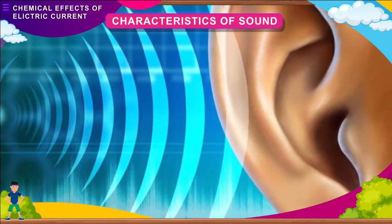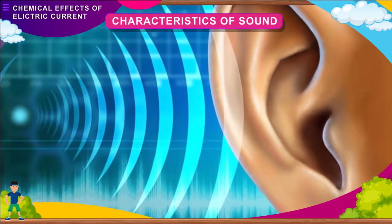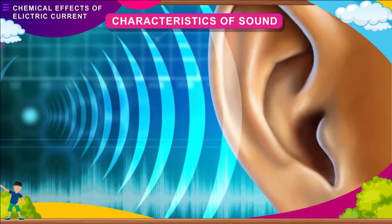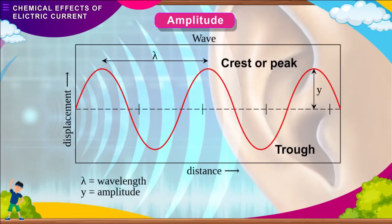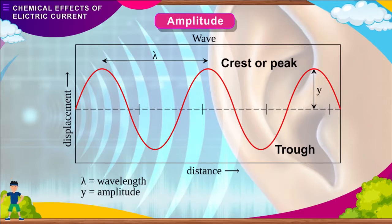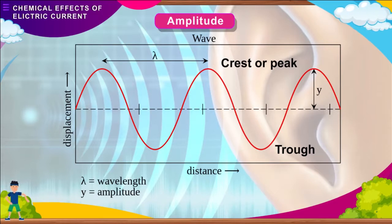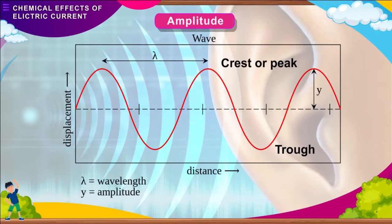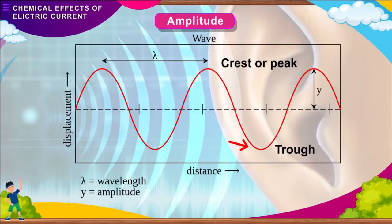We hear different types of sound. What differentiates one sound from another? The characteristics of sound include amplitude, which is the loudness of sound. It refers to the amount of pressure exerted by the sound source on the molecules of air. It is the measure of how high a crest is or how low a trough is. The highest part of the disturbance on a wave is called a crest or peak, and the lowest part is called a trough.